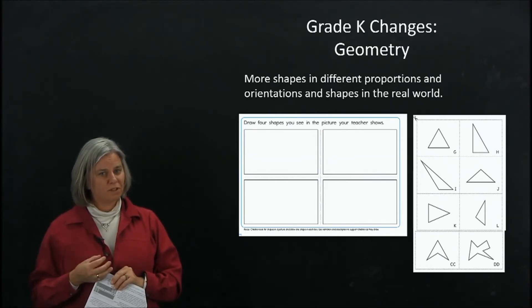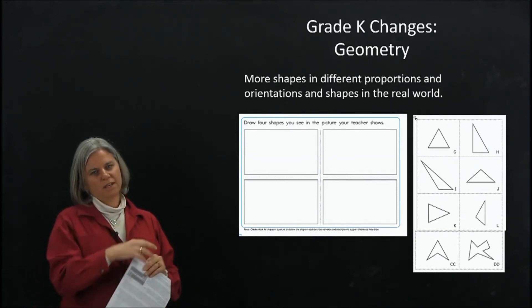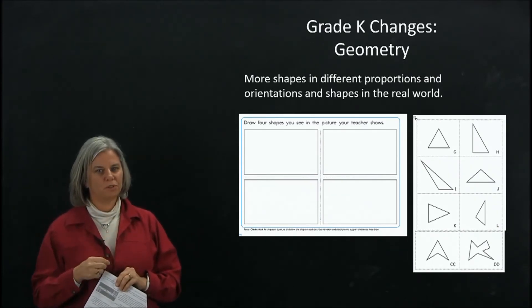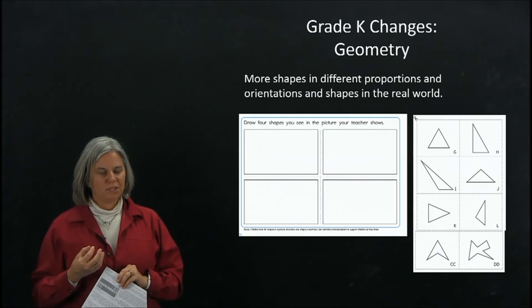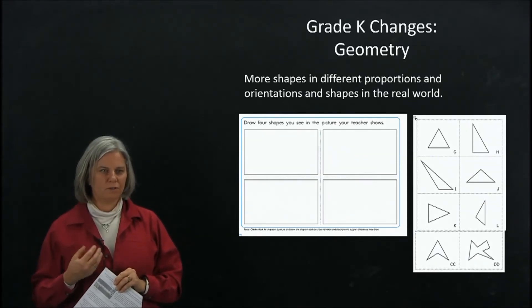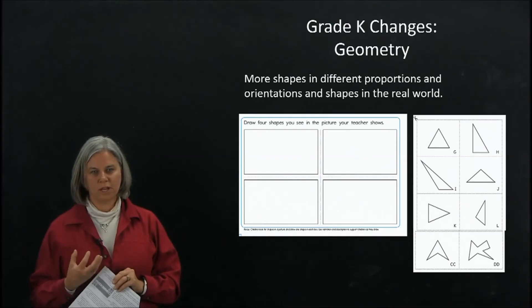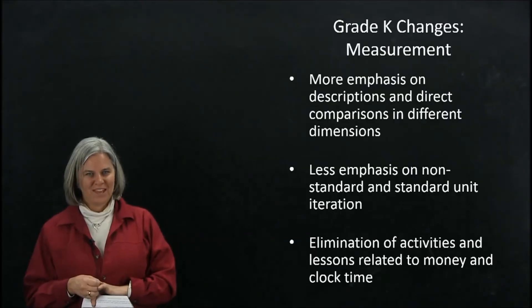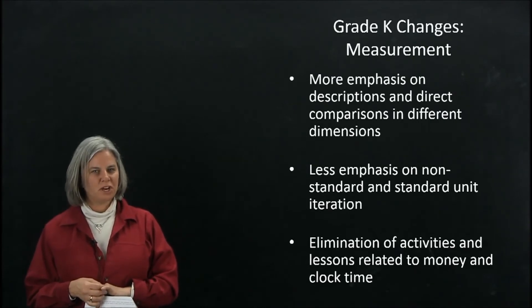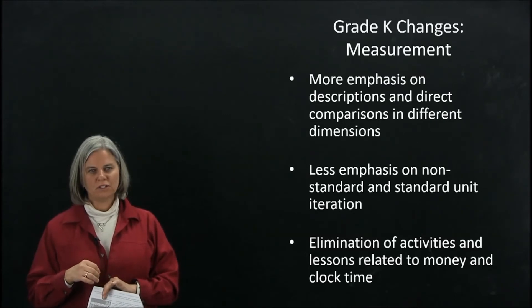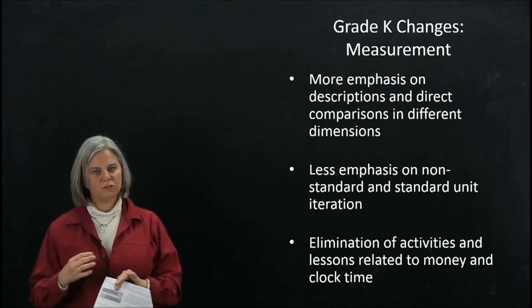We use this to promote a lot of spatial language. Kids are describing not just named shapes that we know like triangles and rectangles, but a lot of other shapes to develop their shape language. This is another of the new My First Math Book pages. You can see kids have four opportunities to draw shapes that they see in a picture that the teacher shows them. A picture might be of a playground or a neighborhood or a school classroom or something like that.